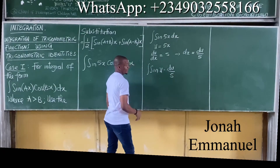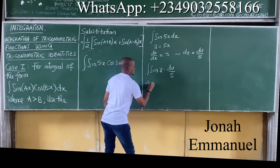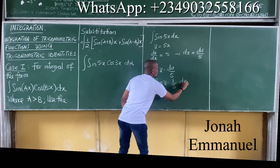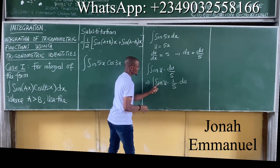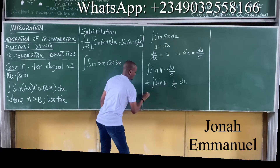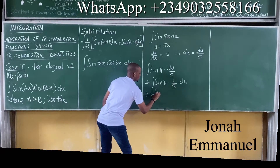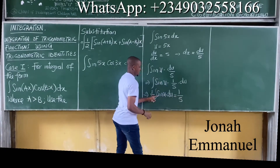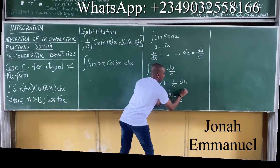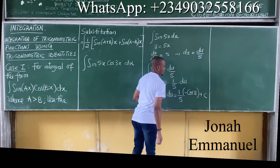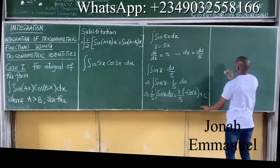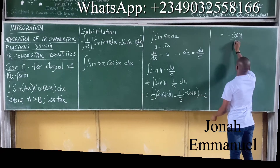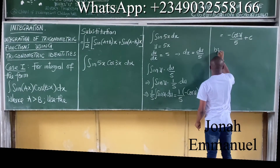Bringing out the constant term, this becomes 1/5 times the integral of sin(u) du. Integrating sin(u) gives minus cos(u), so the result is 1/5 times minus cos(u) plus C, which equals minus cos(5x) over 5 plus C.